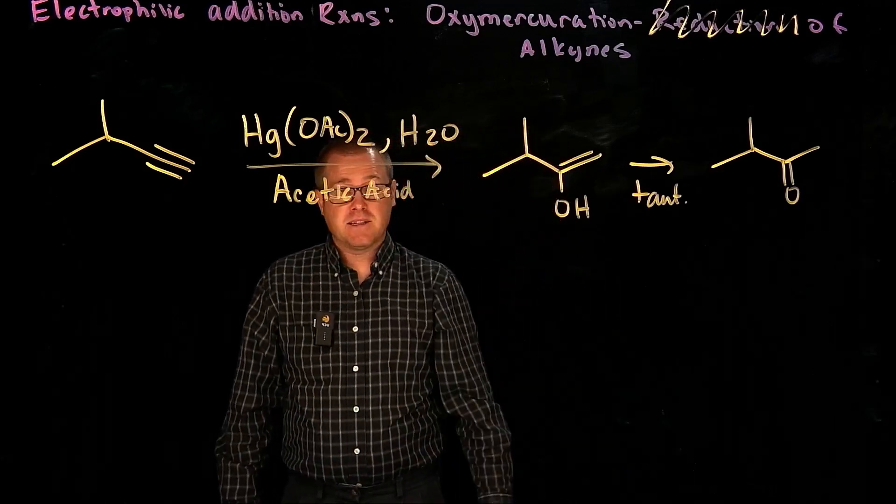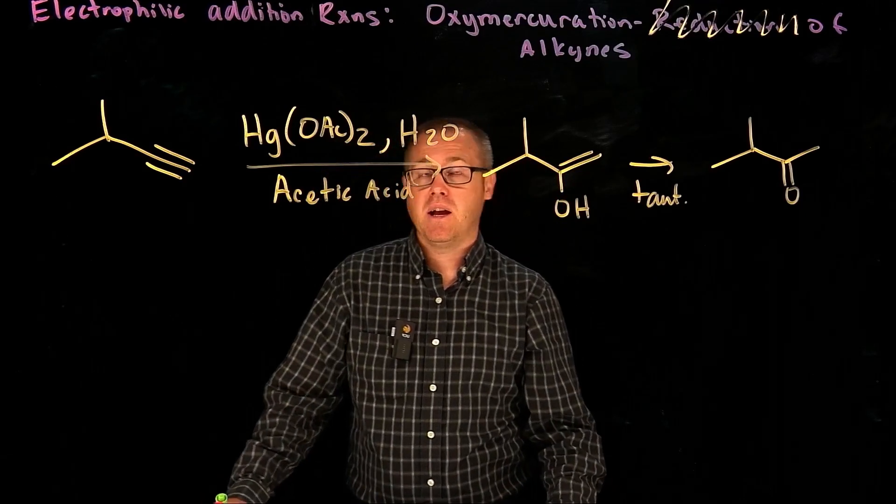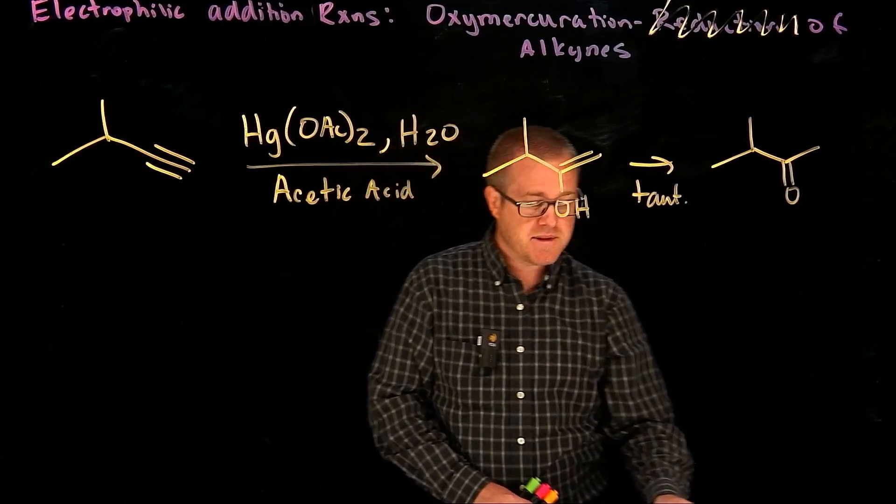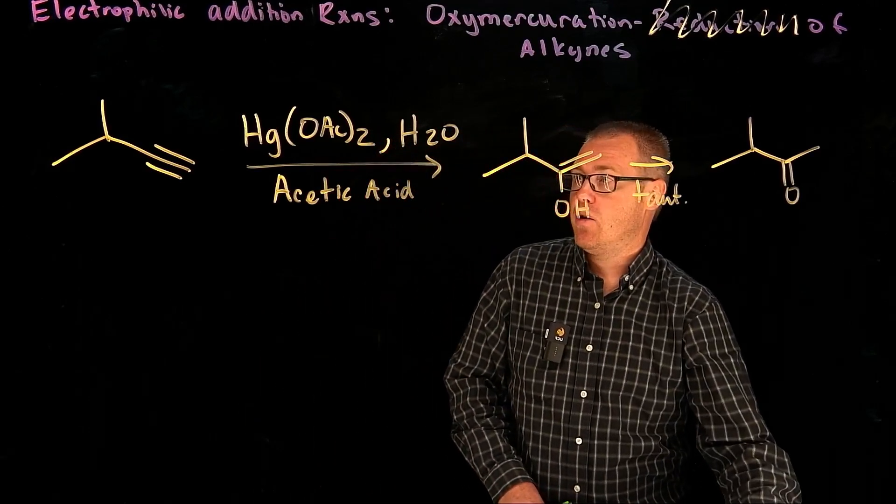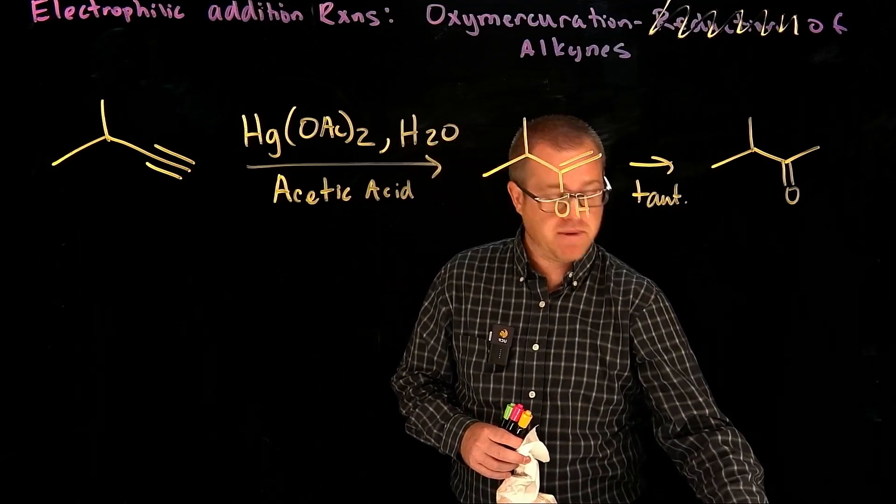So I want to go through the mechanism of this transformation. It's going to be somewhat similar to the oxymercuration reduction of alkenes, but there are going to be some subtle differences. I'm going to erase the board so we have as much space as possible.